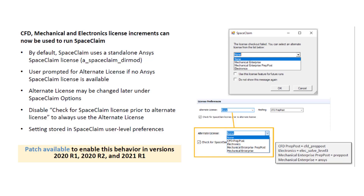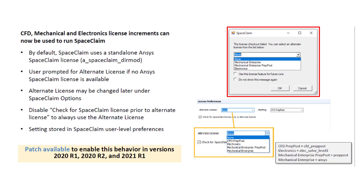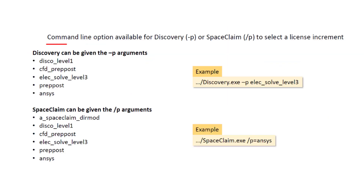SpaceClaim can go with alternate licenses apart from Discovery Modeling and SpaceClaim Direct Modeler, like Mechanical Enterprise, Pre-Post CFD, and Electronics Enterprise. You can also use command line arguments to specify the alternate licenses as shown.